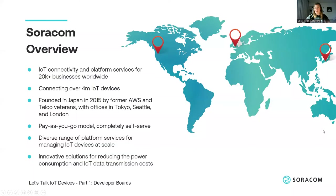Let me also introduce you to Soracom. We are an IoT connectivity and platform service provider, originally from Japan. We offer not only affordable and reliable IoT connectivity, but we also help to accelerate our customers' speed to market, and we make it easy to connect to the cloud. Our solutions also help our customers reduce data consumption and costs. We have a very clear pay-as-you-go model, and we offer many other innovative solutions based on our cloud-agnostic platform. Soracom was founded in 2015 by former AWS and Telco veterans. Today, we have physical offices in Tokyo, Seattle, and London.